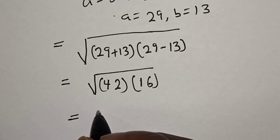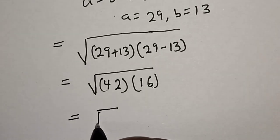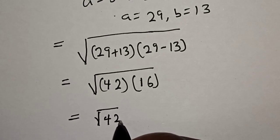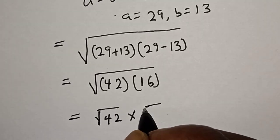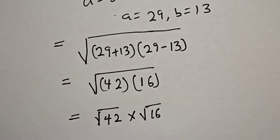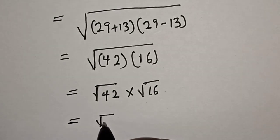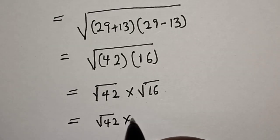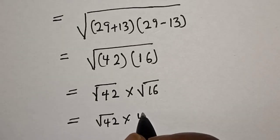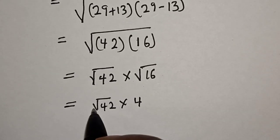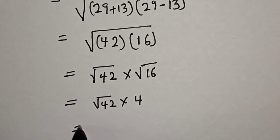And this is equal to square root of 42 multiplied by square root of 16, which is 4. Then 4 times square root of 42, this is equal to 4 root 42.